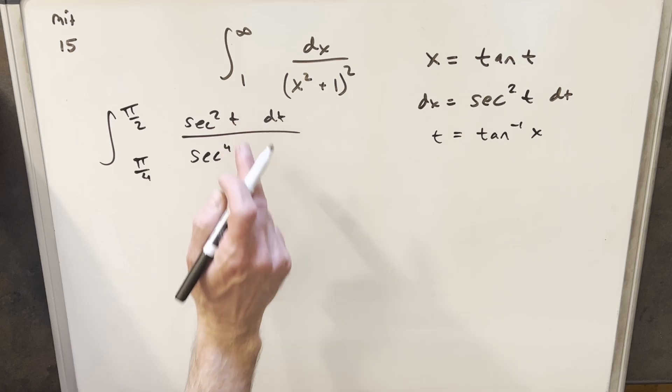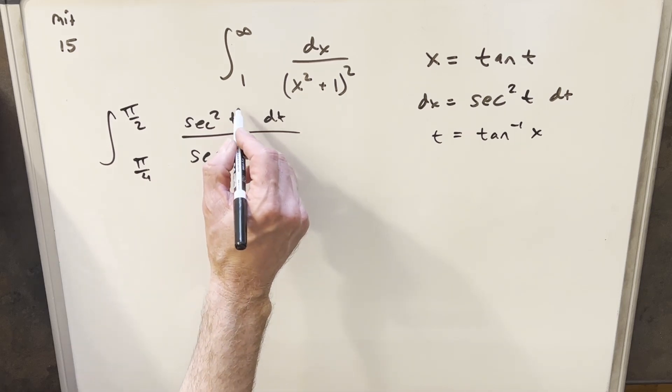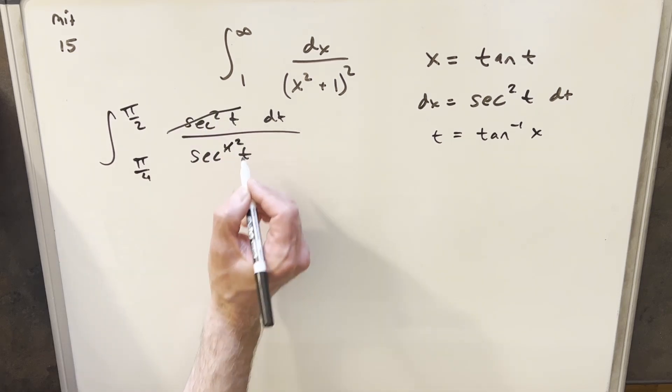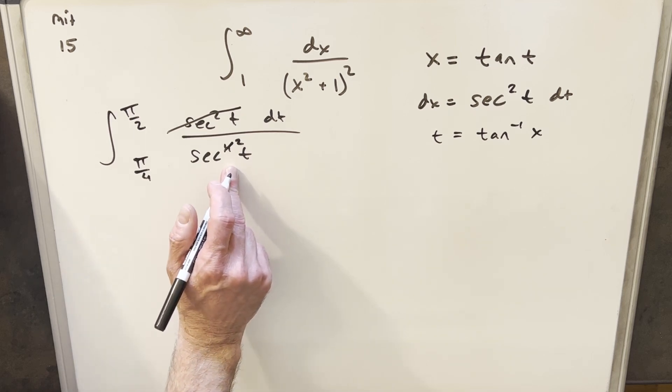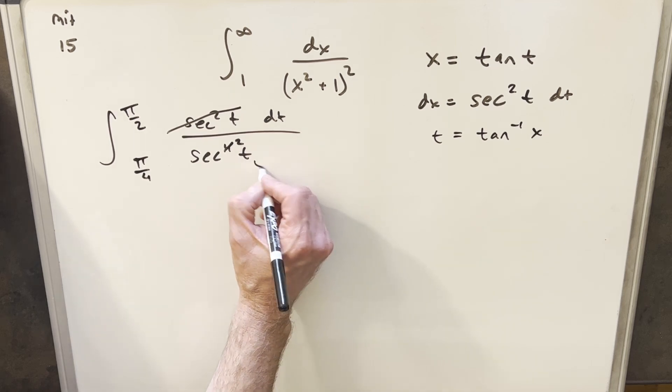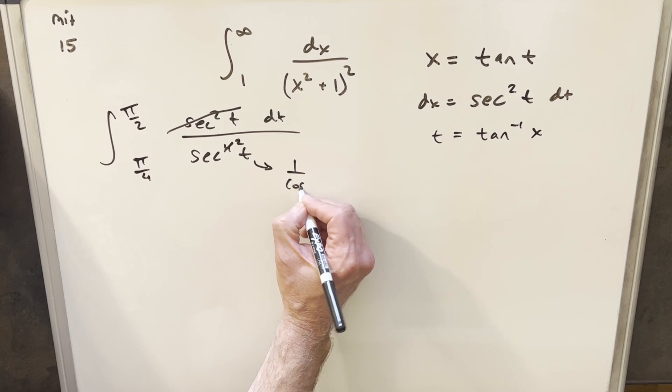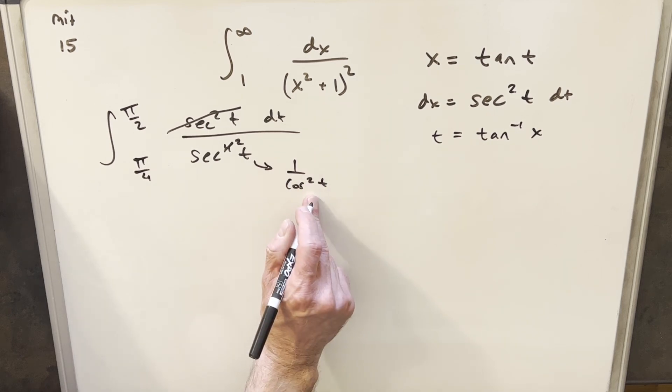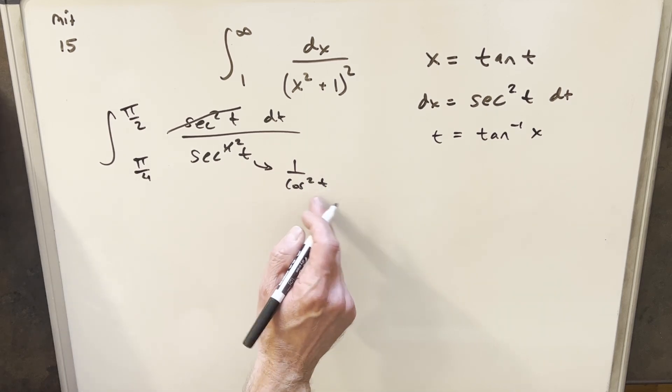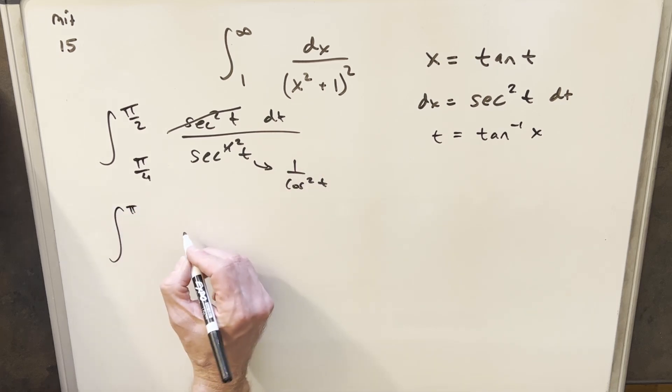We have sec²(t) over sec⁴(t). We can do some cancellation, and then we have just sec²(t) in the denominator. But sec²(t) is the same thing as 1/cos²(t). So because we have 1/cos²(t) in the denominator, when we rewrite it, this is going to be just cos²(t).